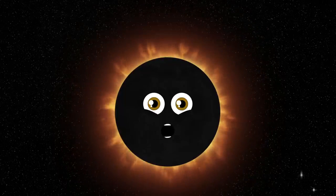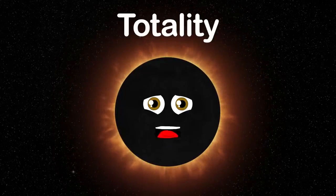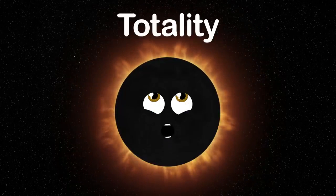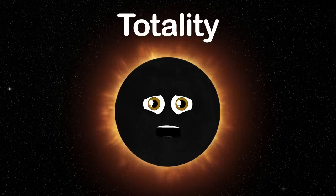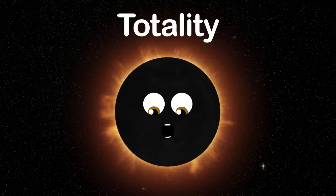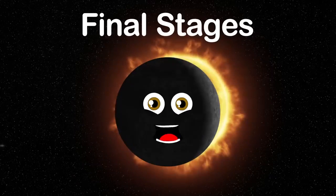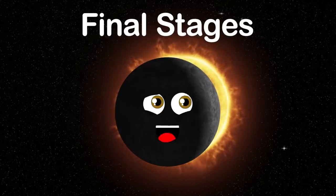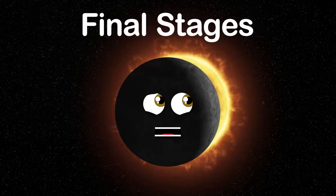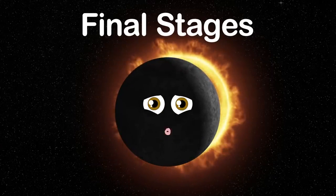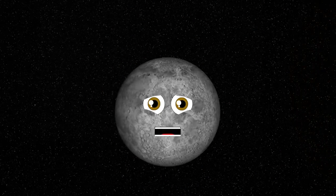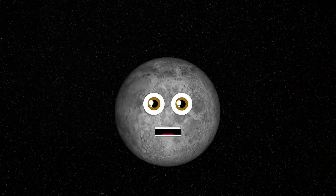The fourth and most important stage is called totality — when the moon completely covers the disk of the sun. Then come the final stages in which the sun will grow a crescent, on the opposite side of where Bailey's Beads were shown.